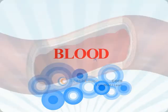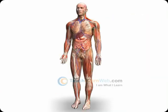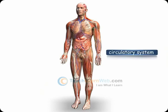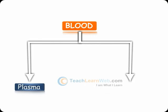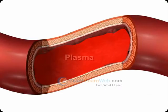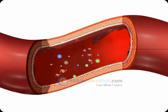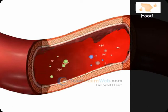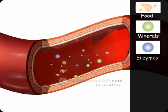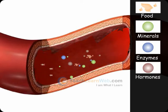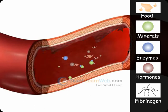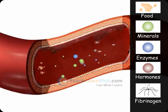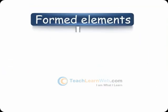Blood is the red fluid tissue of the body and is the medium of the circulatory system. It can be subdivided into plasma and formed elements. Plasma is the fluid part of the blood. It contains serum carrying absorbed food materials, minerals, enzymes, and hormones, as well as fibrinogen, which represents the protein part of the blood.